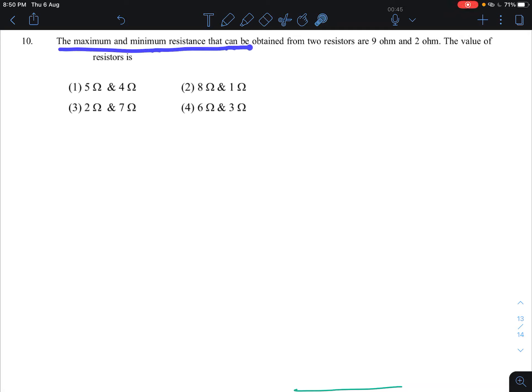The maximum and minimum resistance that can be obtained from two resistors are 9 ohm and 2 ohm. The value of resistors is... So here maximum resistance is 9 ohm and minimum resistance is 2 ohm using two resistances.